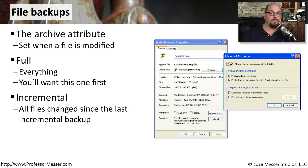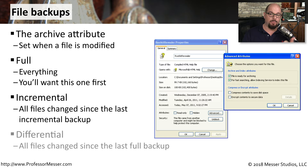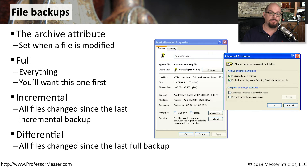With an incremental backup, you're backing up all of the files that have been changed since the last incremental backup. And with a differential backup, you're backing up all of the files that were changed since you performed a full backup.